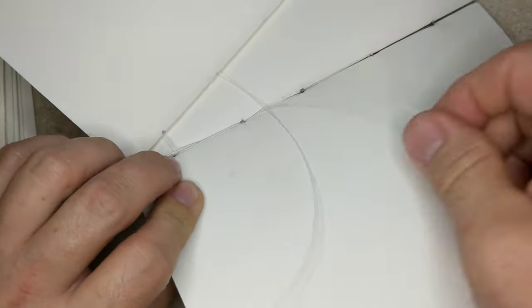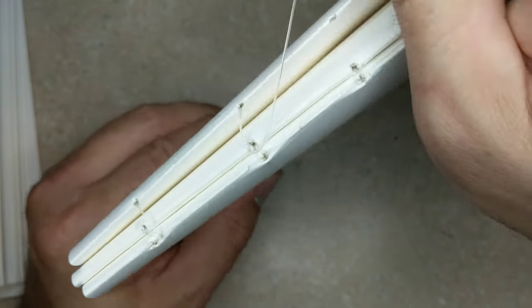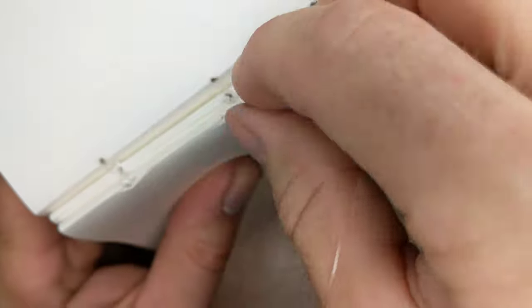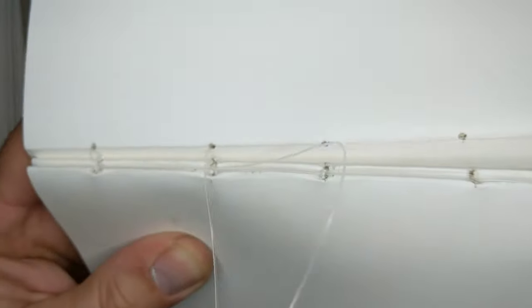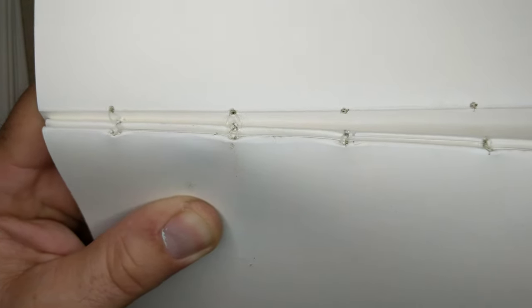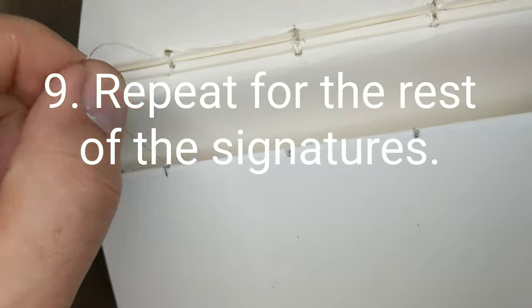So, once you have the third signature sewn to the book, the fourth, fifth, and every signature after that is the same. This is, by the way, the way that I sew my books together. There are other methods of book sewing. This is just kind of the way that I've done it. I looked at a bunch of books back in the late 90s, I guess, on how to make books. And then I came up with a method that worked for me.